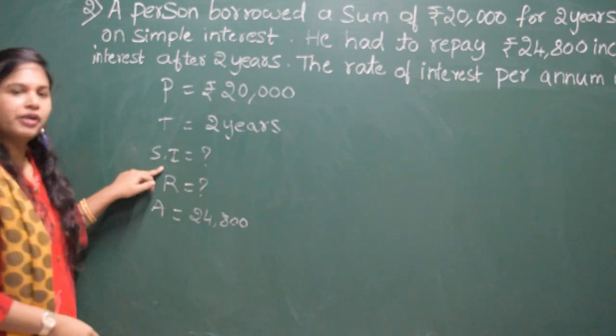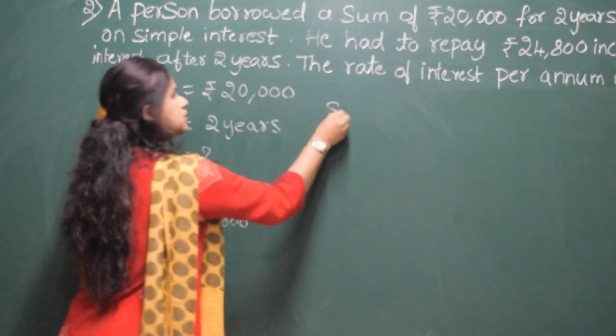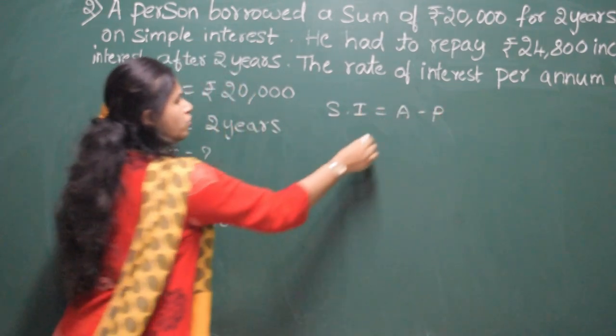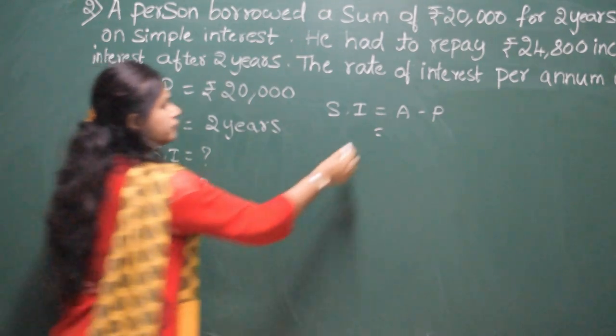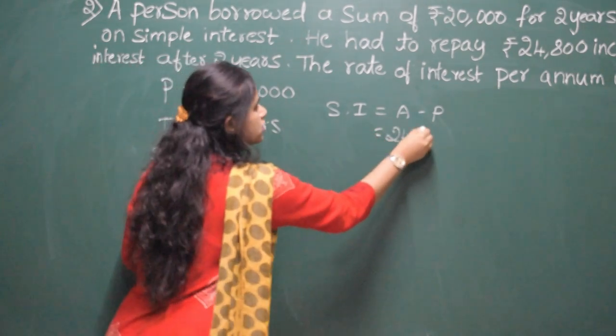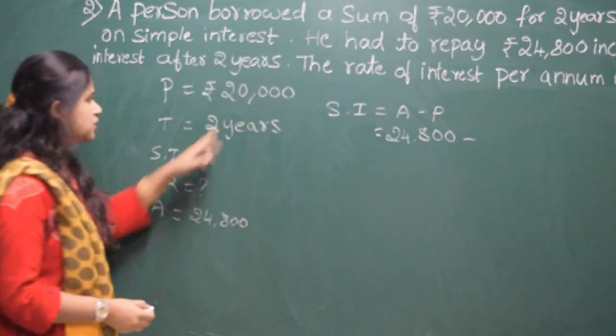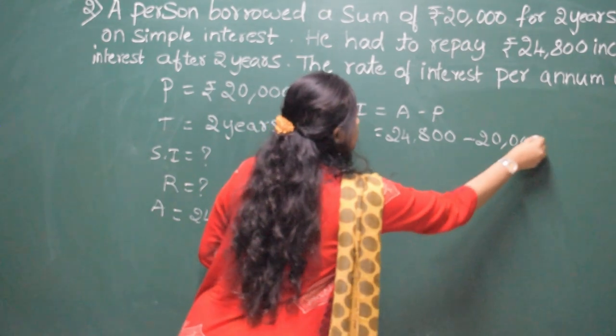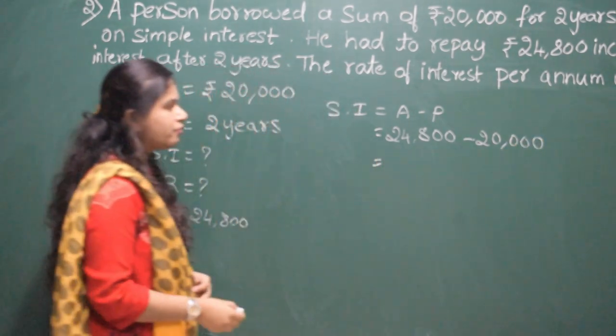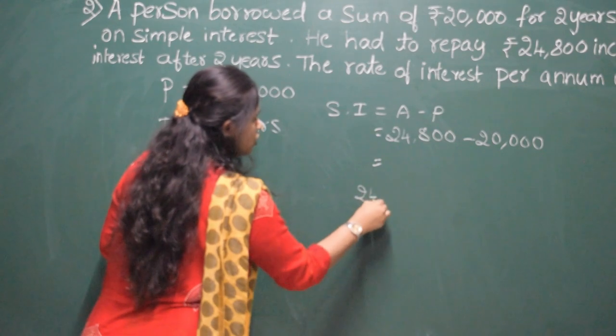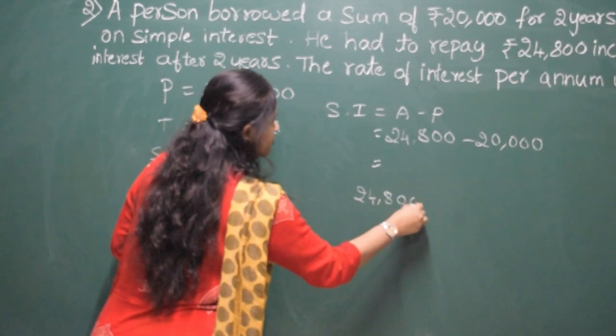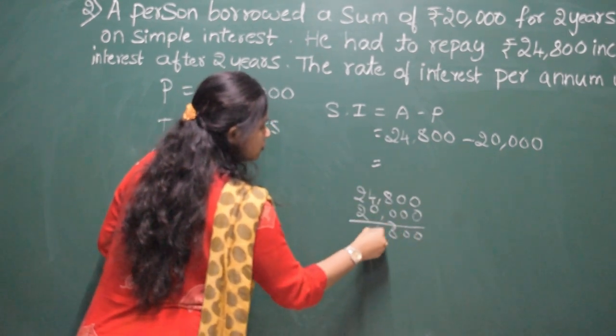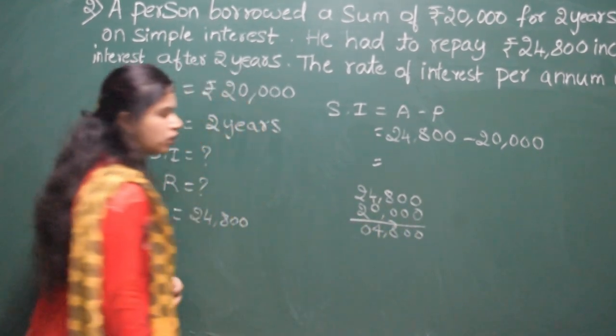First, we should find the simple interest. Simple interest is equal to amount minus principal. Amount is 24,800 minus principal amount. Principal is 20,000. After you should subtract it, 24,800 minus 20,000.